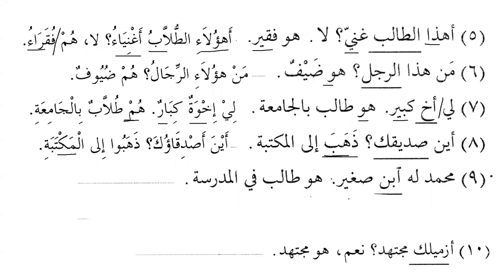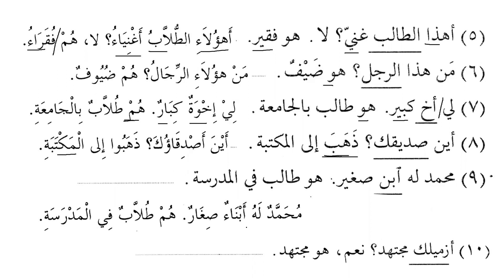محمد له ابن صغير — Muhammad has a young son. هو طالب في المدرسة — he is a student in the school. Changed to plural: محمد له أبناء صغار — Muhammad has young children. هم طلاب في المدرسة — they are students in the school. Subject and predicate must always agree in number and gender.